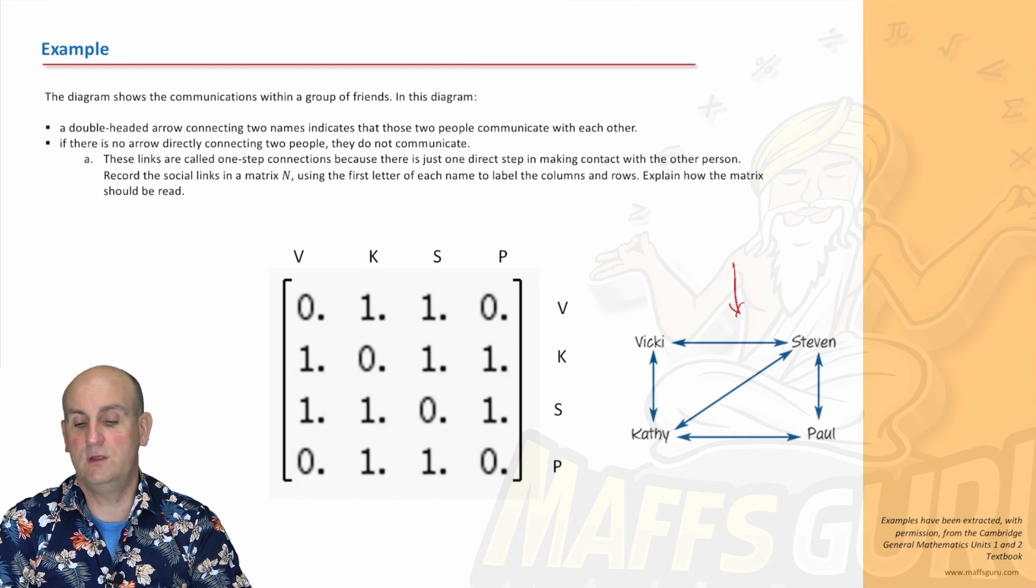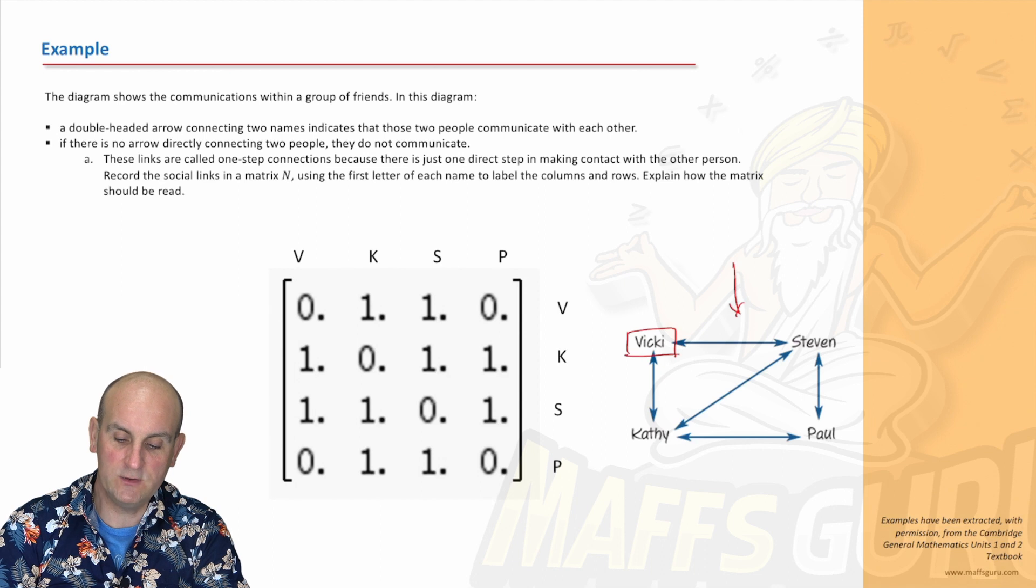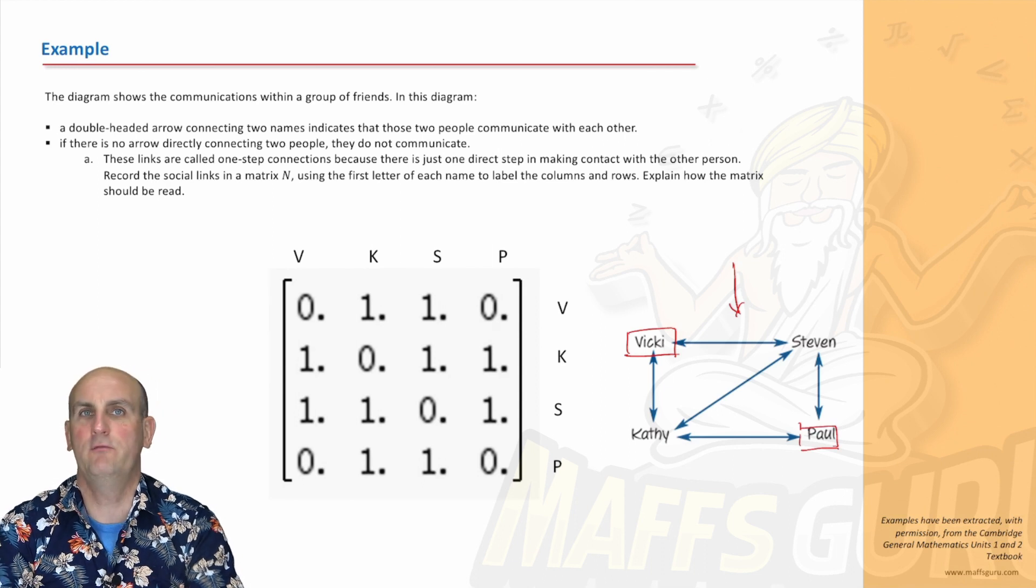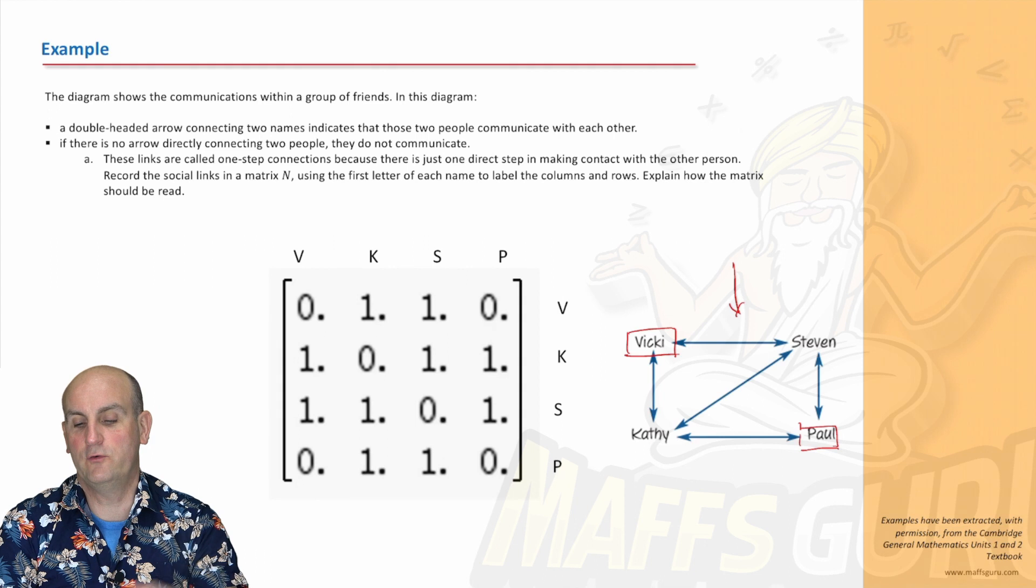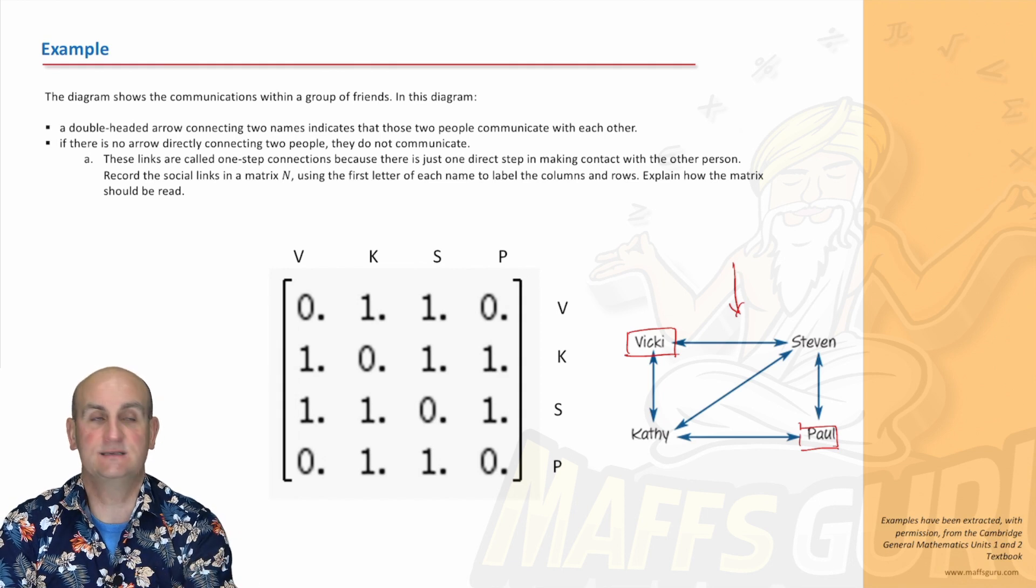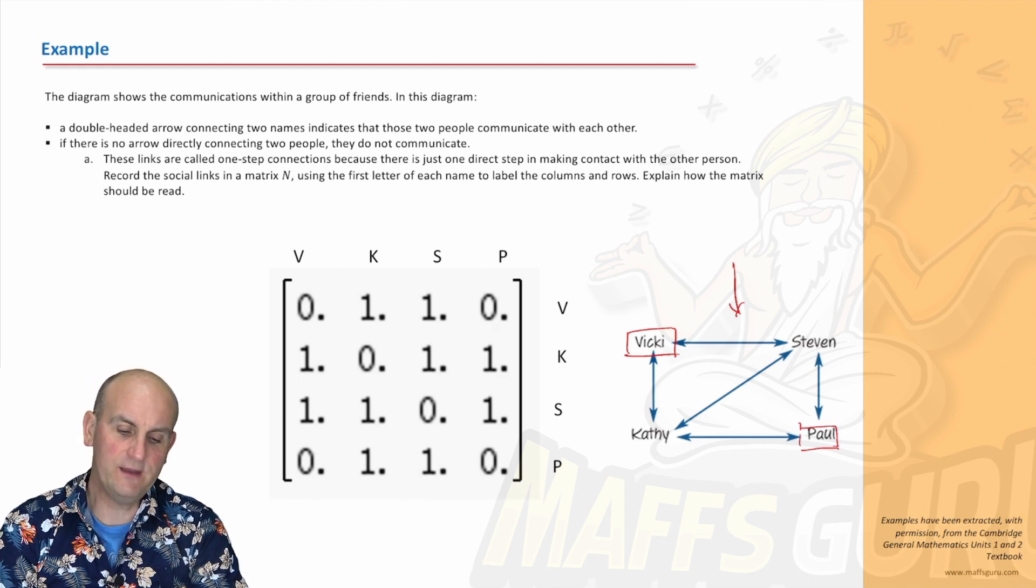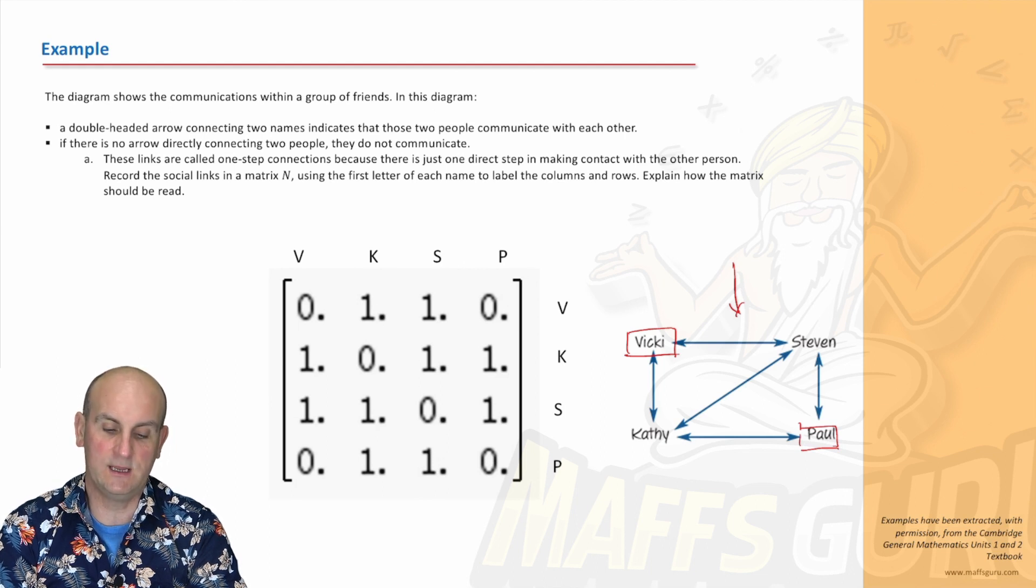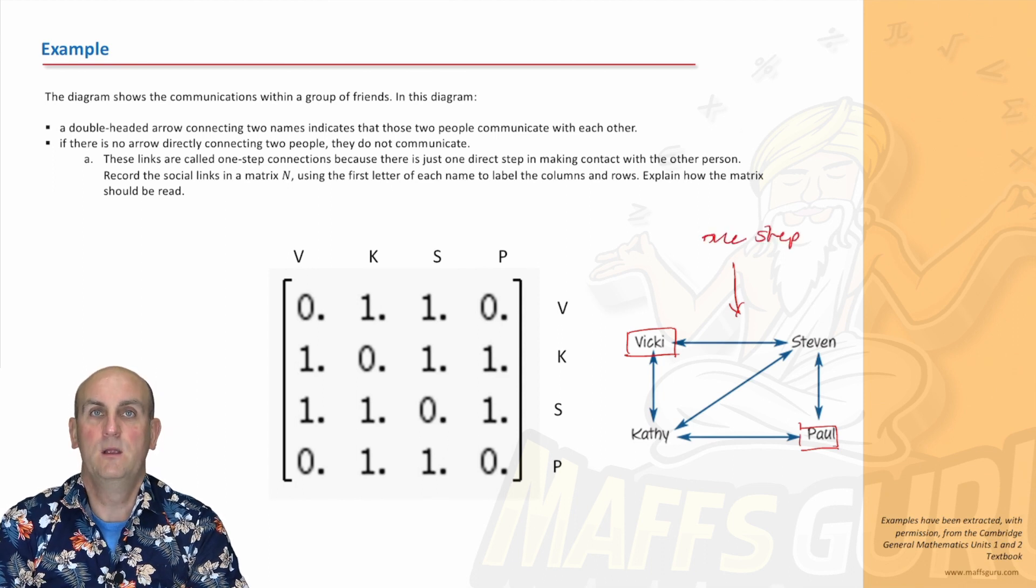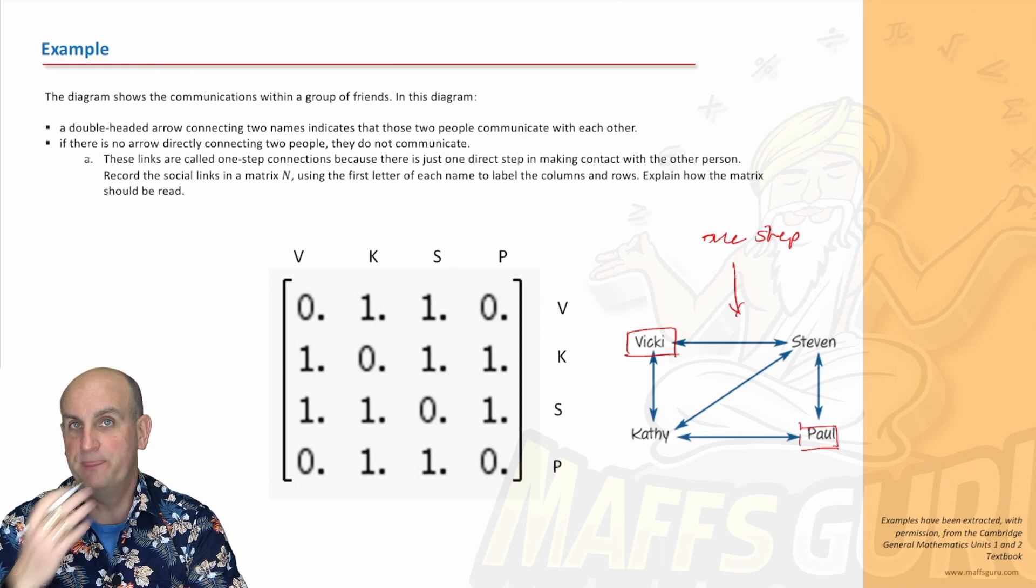Where there is no connection directly between them, it means they aren't necessarily talking. If you notice Vicky and Paul, there is no arrow going directly between them. That means there's no direct communication path. Obviously Vicky could talk to Paul through Kathy or through Stephen. These links are called one-step communications. A one-step communication means they can talk to each other directly.